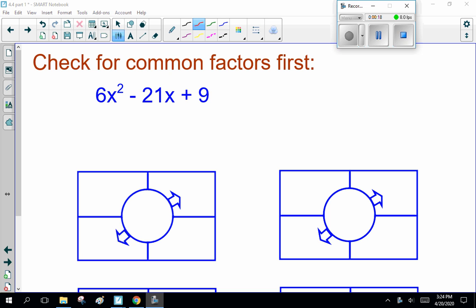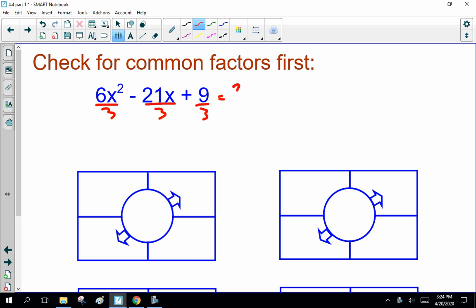6x squared minus 21x plus 9, you note, divide everything by 3. So this is 3 times, 6 divided by 3 is 2x squared, and 21 divided by 3 is minus 7x plus 3. So you're actually factoring 2x squared minus 7x plus 3.